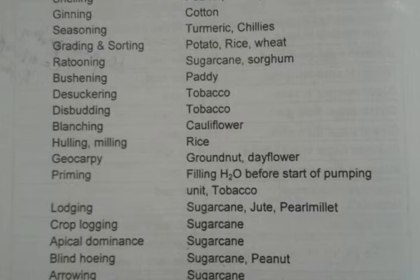Bushening is for paddy. De-suckering is for tobacco. Disbudding for tobacco again. Blanching is for cauliflower. Hulling and milling is for rice. Priming is filling water before start of pumping unit in tobacco.